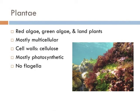Plants include red algae, green algae, and land plants — and some are considered protists, like the red algae and the green algae. They're mostly multicellular, nearly all have cell walls made out of cellulose, they're photosynthetic, and they have no flagella.